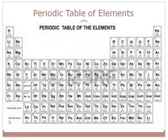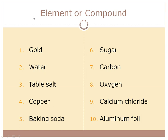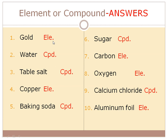Pause and label these as either an element or a compound. Gold — element, it's on the periodic table. Water — compound, H2O. Table salt — compound, NaCl. Copper — element. Baking soda — compound, not on the periodic table. Sugar — compound. Carbon — element. Oxygen — element. Calcium chloride — two different elements, calcium and chlorine, so it's a compound. Aluminum foil — don't let 'foil' fool you, aluminum is an element whether it's a foil, a statue, or anything else.